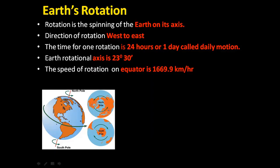Now we learn about the important motion called rotation. Rotation is the spinning of the Earth on its own axis. As you can see in this diagram, the axis connects the North Pole to the South Pole. The direction of rotation is always west to east. The time for one rotation is 24 hours, or one day — called the daily motion.